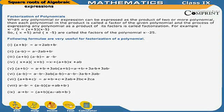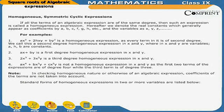(a − b)³ = a³ − b³ − 3ab(a − b). Also, a³ − b³ = (a − b)(a² + ab + b²), and a³ + b³ = (a + b)(a² − ab + b²).